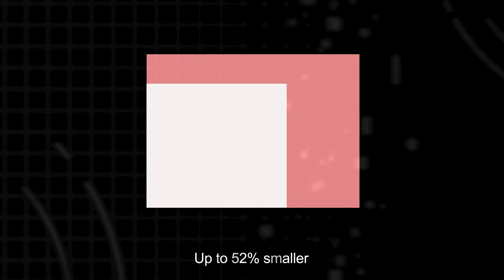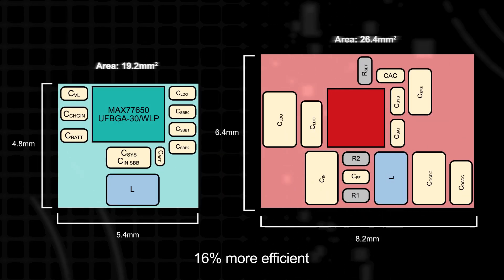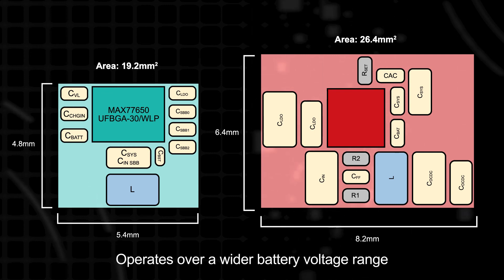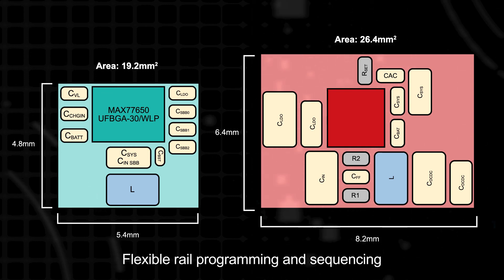The result is a power system that is up to 52% smaller and 16% more efficient than a discrete solution, while also being able to operate over a wider battery voltage range and provide flexible rail programming and sequencing.